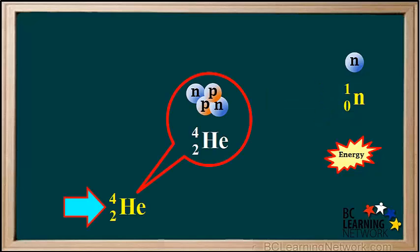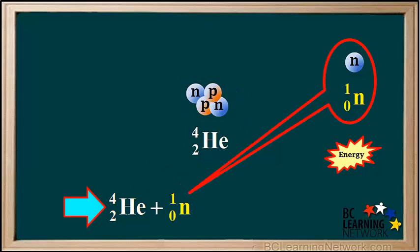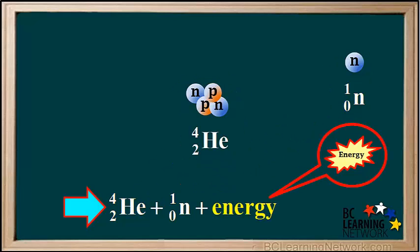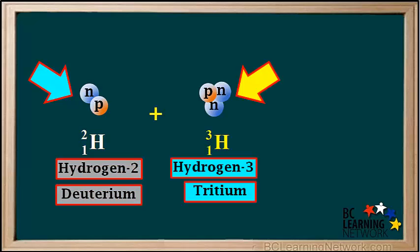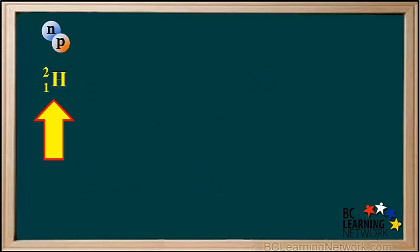So to summarize, the products of this fusion reaction are a helium 4 nucleus, a neutron, and energy. You may recall that the two original reactants were hydrogen 2, or deuterium, and hydrogen 3, or tritium. So we can now use what we start with, and what we end up with, to write an equation for this fusion process.